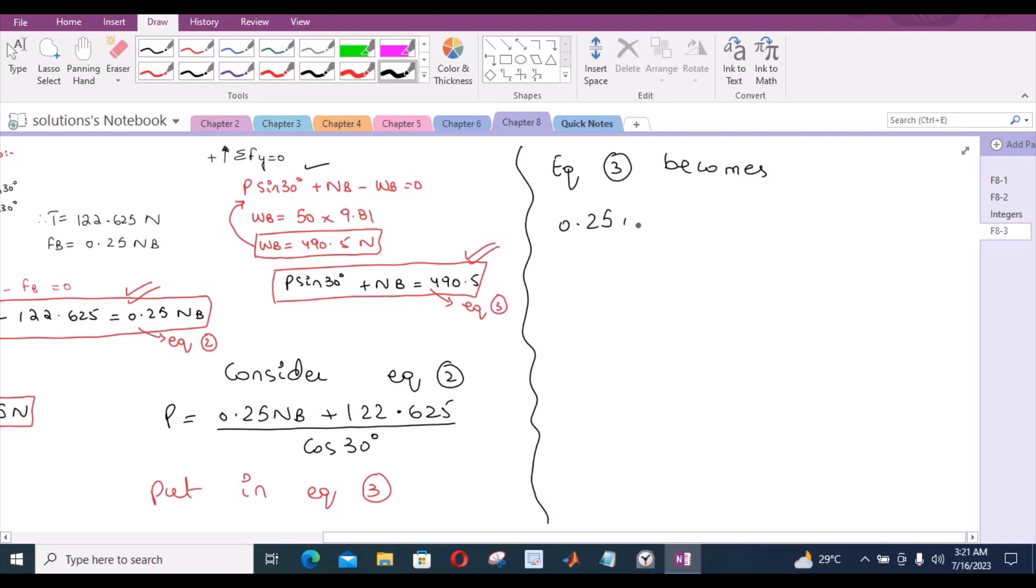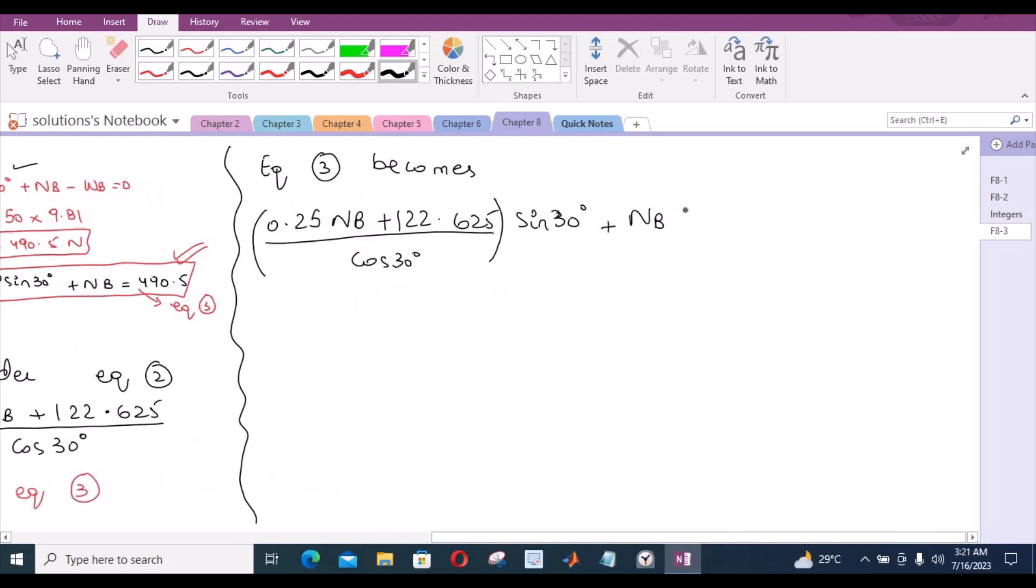Is equal to 490.5. Upon simplification, from this equation, NB becomes 366.774 Newtons. So put NB in equation A. Let's call this equation as equation A.